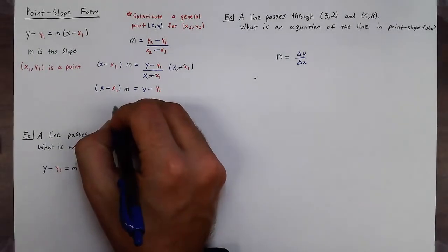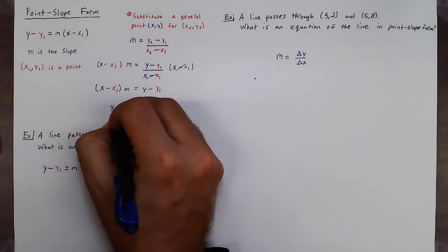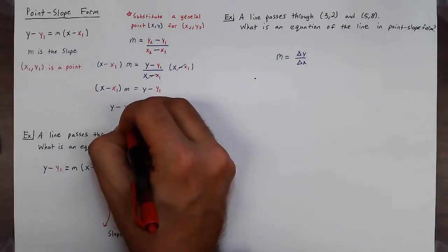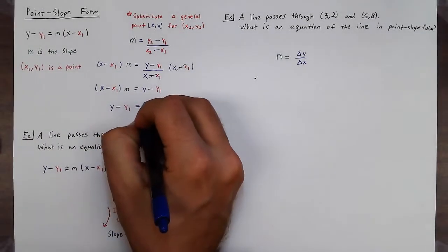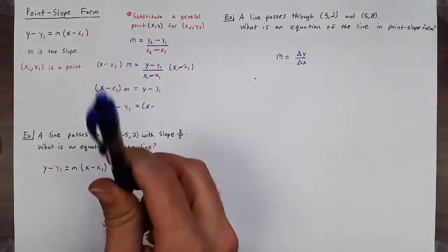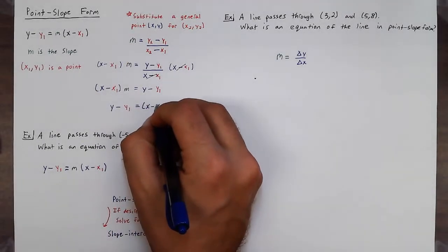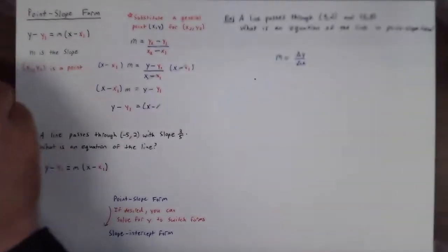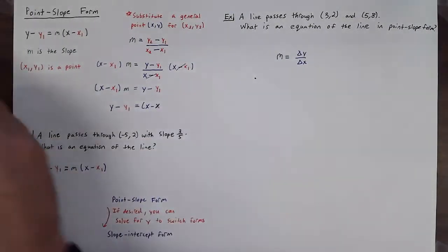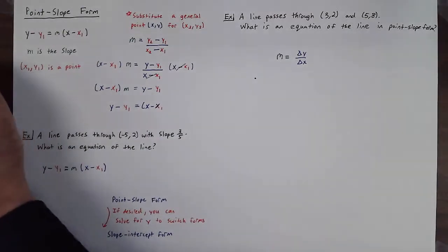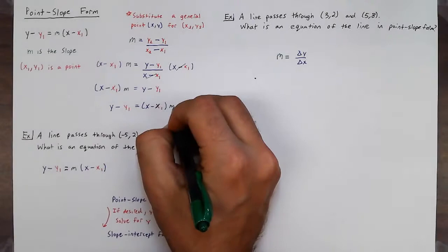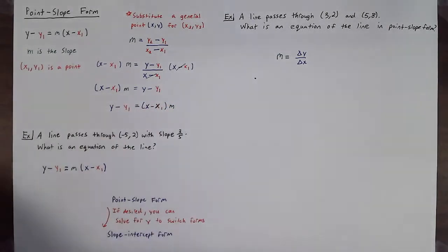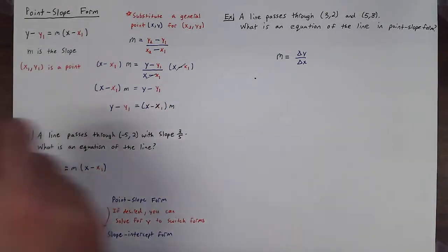And due to the reflexive property of equations, we can truly state that y minus y1 is equal to x1 minus x1 times m. And then use that same commutative property on the right side of the equation.